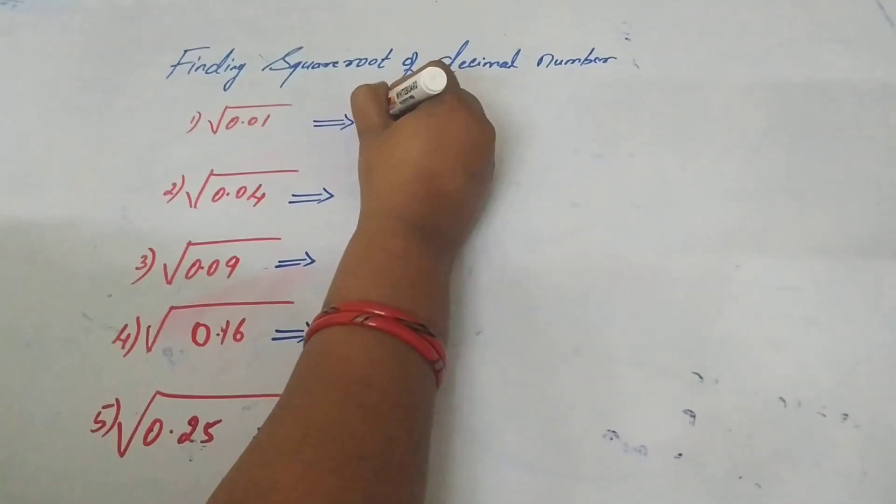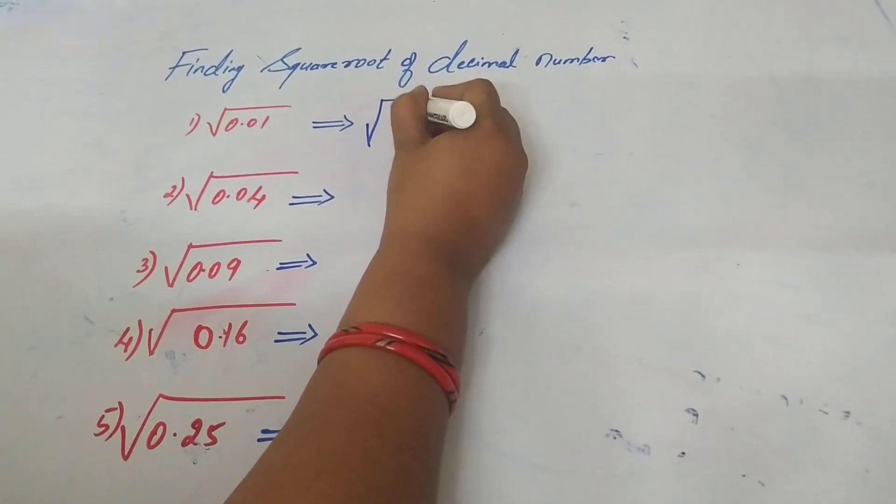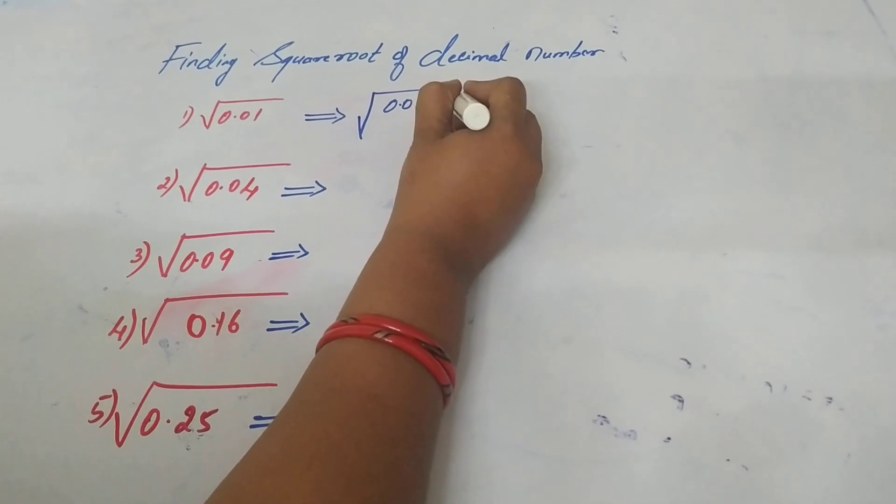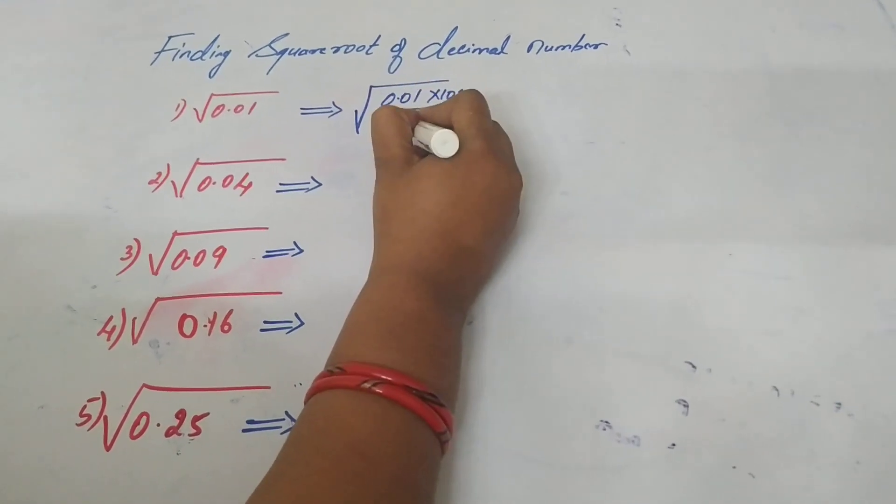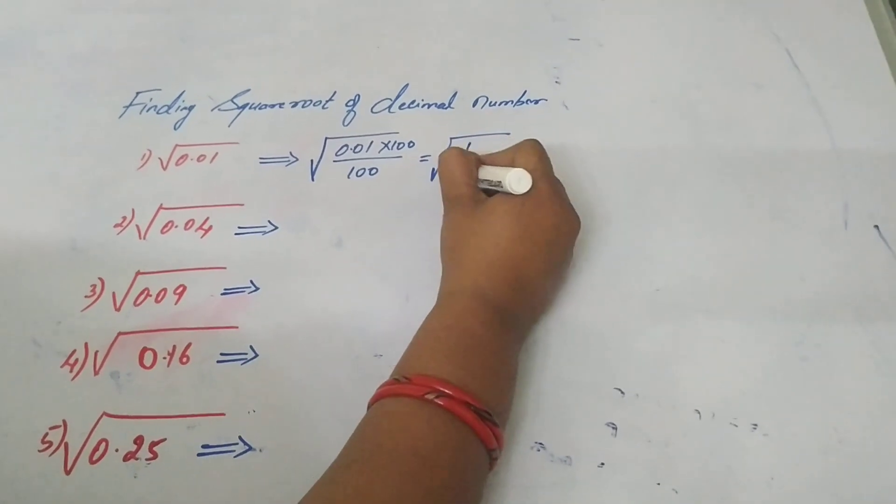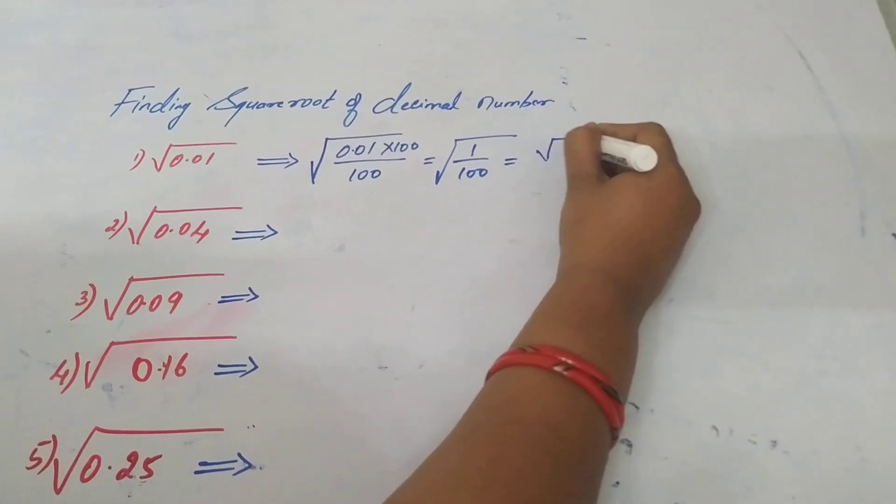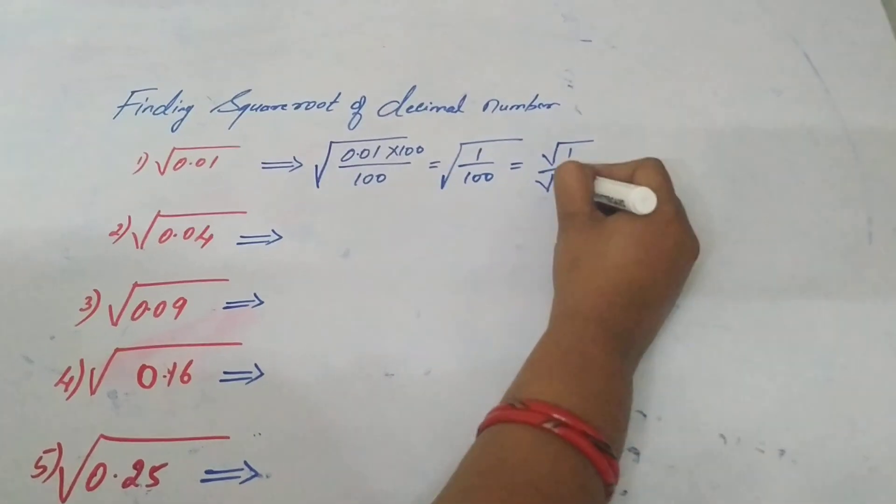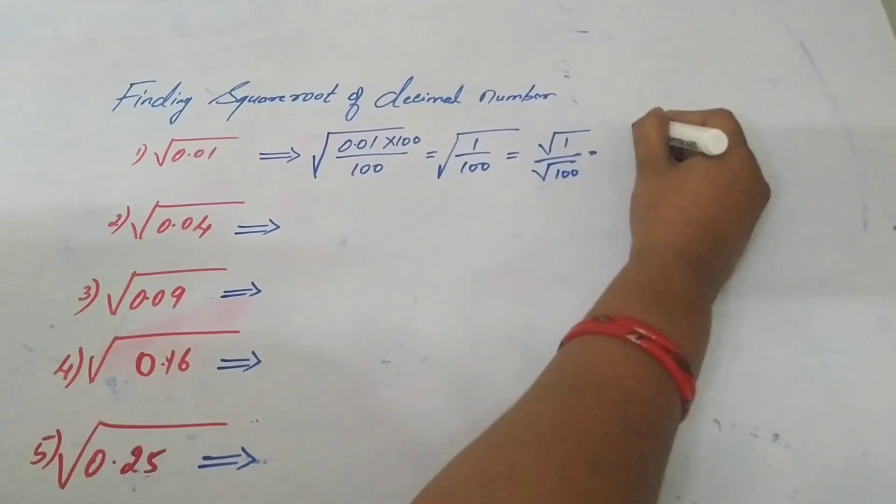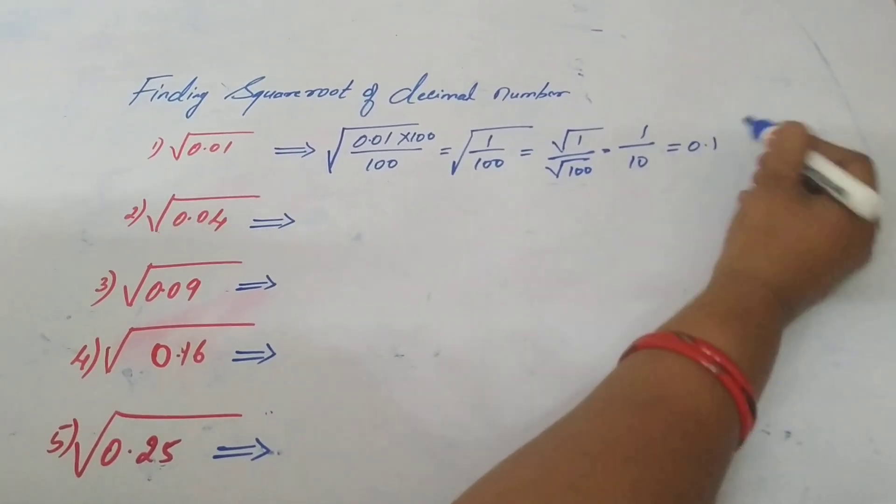This can be further written as 0.01 multiplied by 100 by 100. So we get root 1 by 100, which can be written as root 1 by root 100, which is equal to 1 by 10. That is nothing but 0.1.